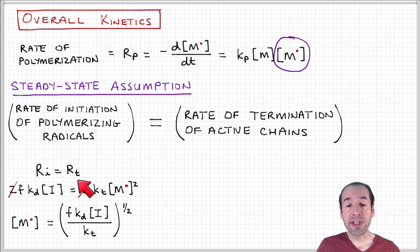These factors of two cancel out and we can solve for this quantity, which is the concentration or the quantity of active chains in the sample. So we can get an expression for that in terms of our initiator efficiency factor, the decomposition rate constant and the initiator concentration relative to the overall rate constant associated with termination.